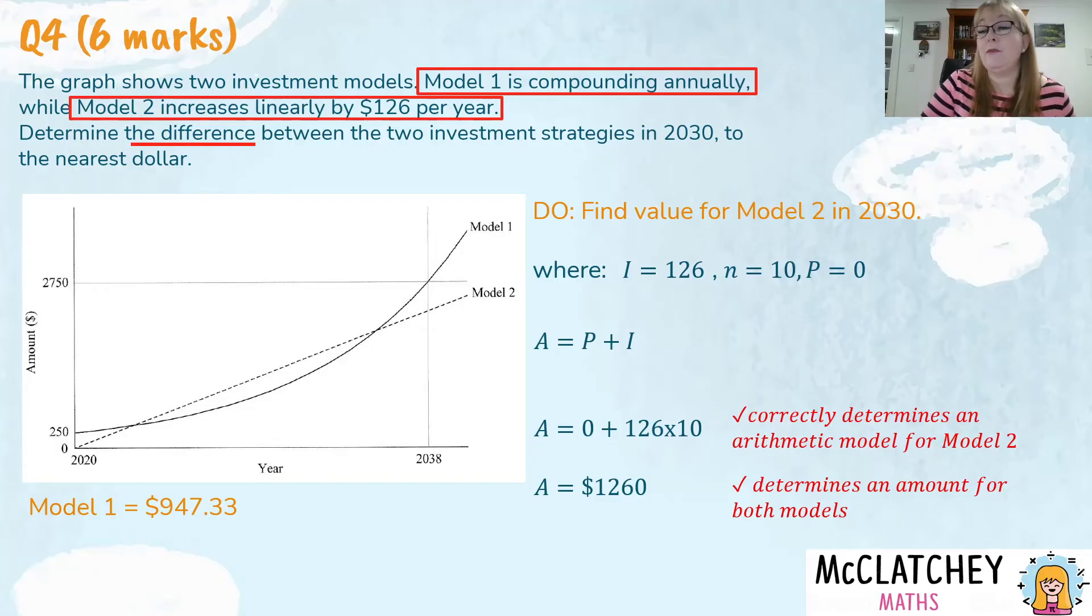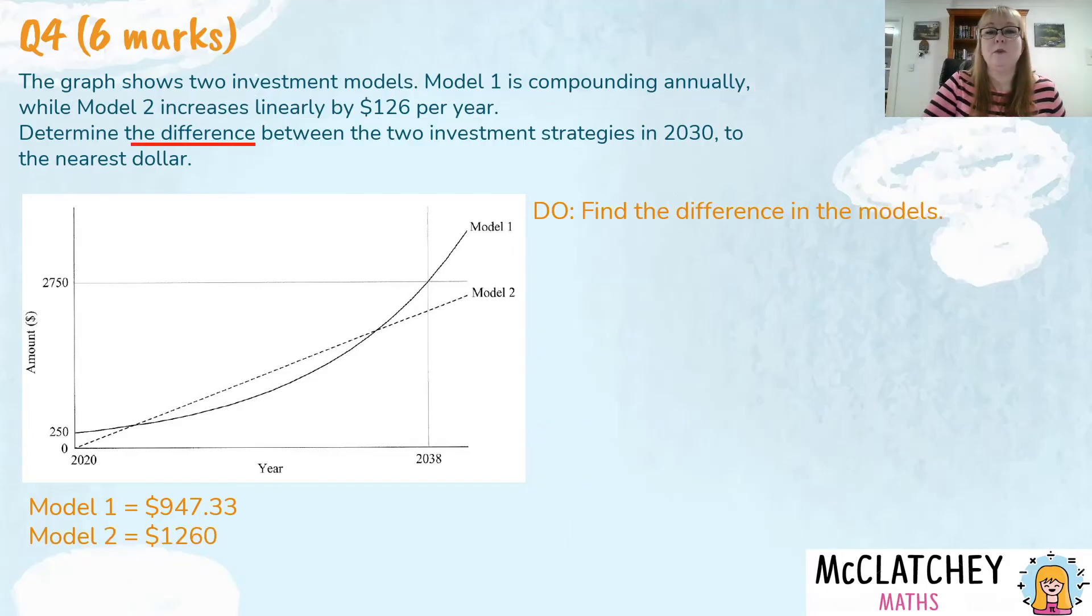Now notice it doesn't really say correctly determines an amount. So if you picked the wrong model earlier on, or incorrectly substituted and made a mistake, you still could have got a mark here as long as you come up with an amount for both models. Now, the next step is to find the difference. That's the main part of the questions asking us to get our final answer.